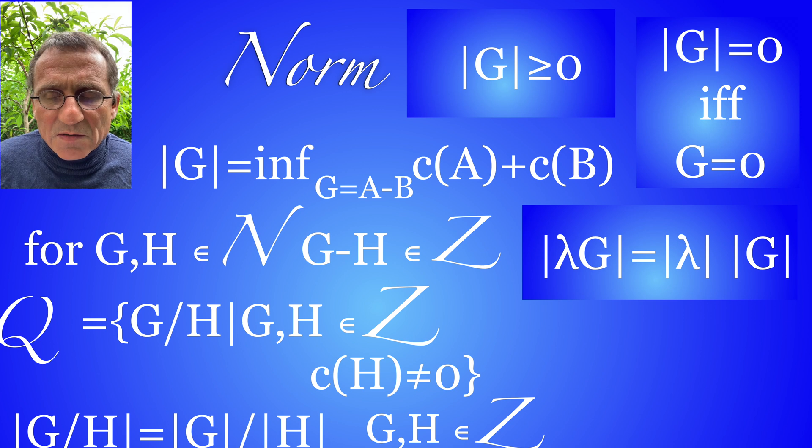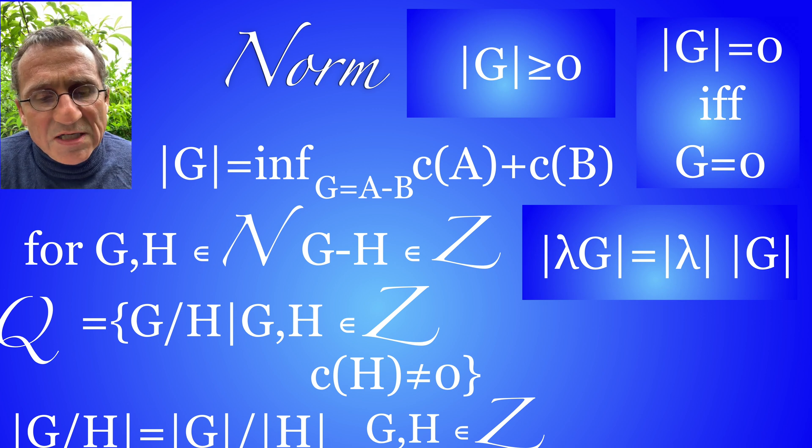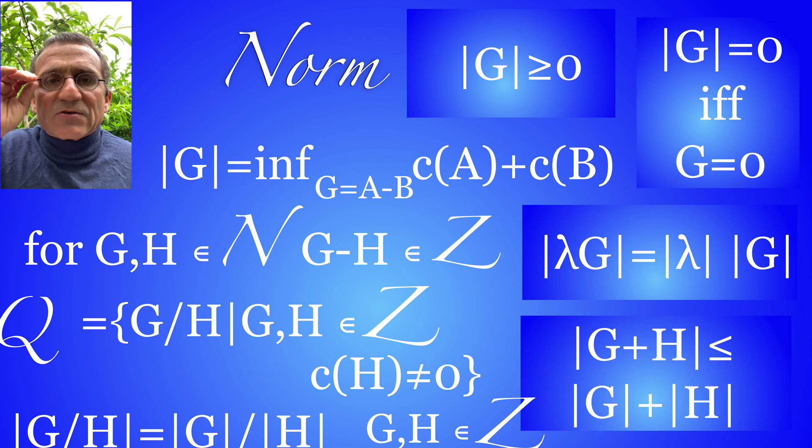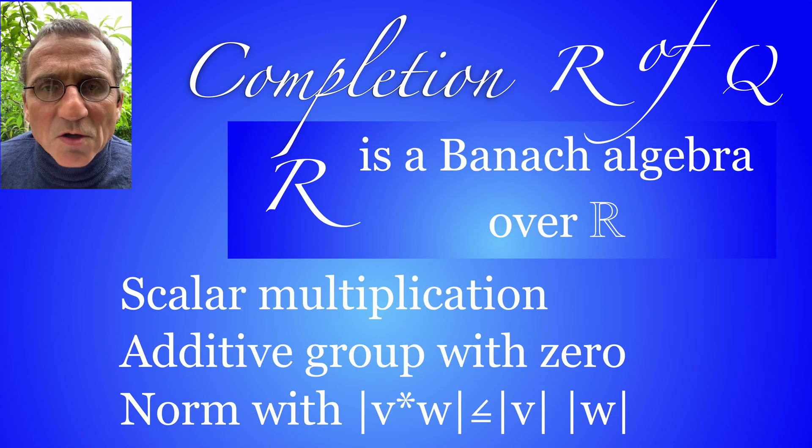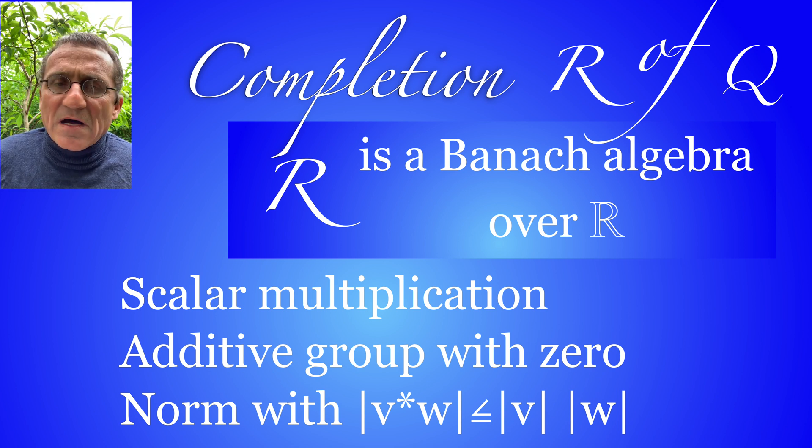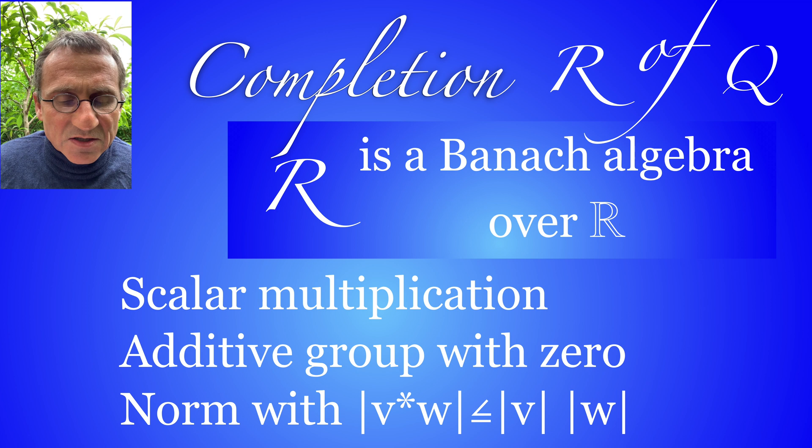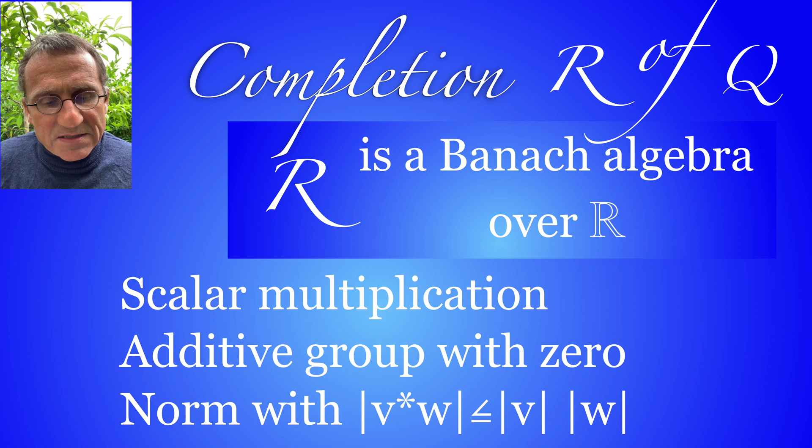We come to that the scalar multiplication is given by the multiplication with complete graphs or fractions of complete graphs because the complete graphs generate the real numbers. So this is a property which holds and then we have the triangle inequality so we really have a normed space, a pre-Banach space and then we can complete that. We get the Banach algebra over R which is a scalar multiplication, a vector space linear space, and it has a norm which satisfies this algebra property.